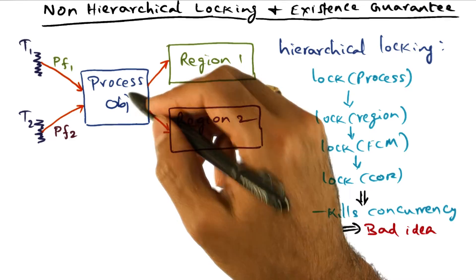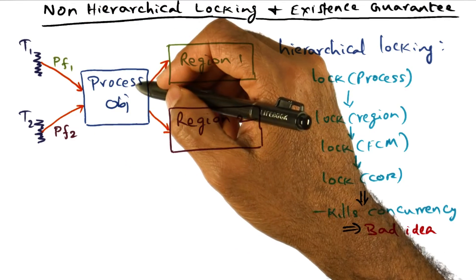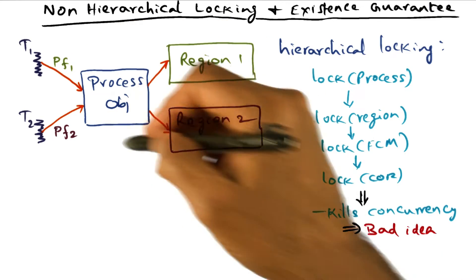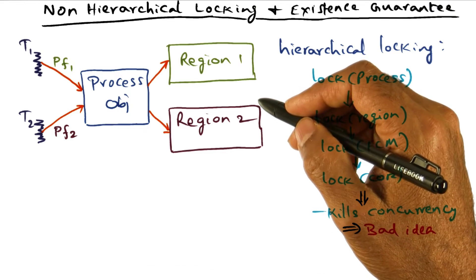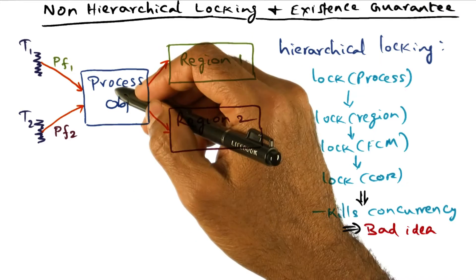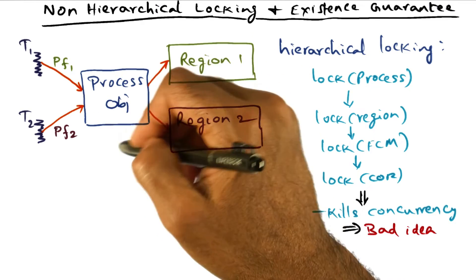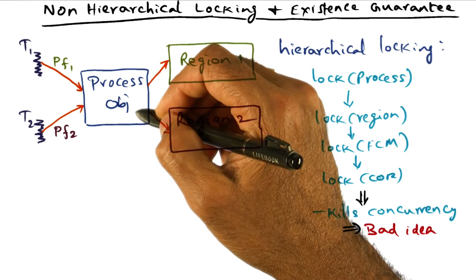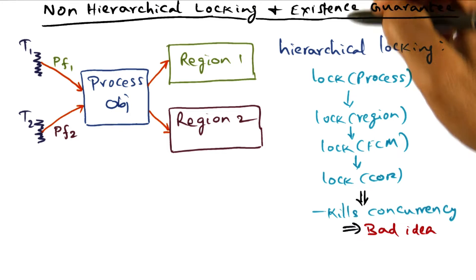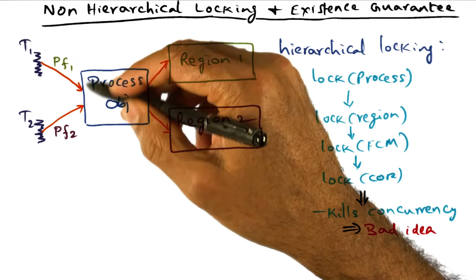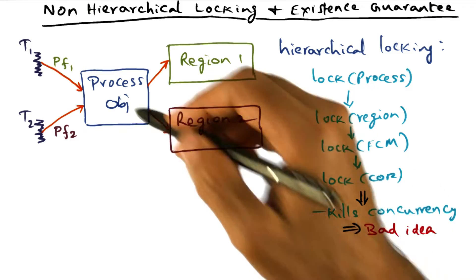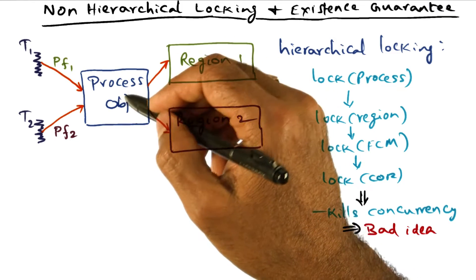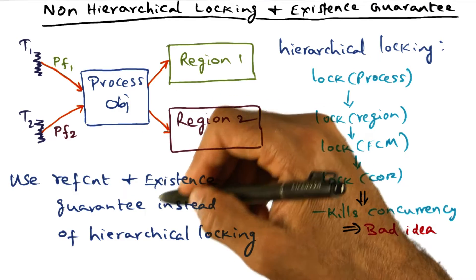You do need integrity of this process object. The reason we might lock the process object is to ensure that it doesn't go away. How can it go away? One of the things that can happen under the covers while page fault service is happening is a decision to migrate a process from one processor to another. If that happens, the process object may be migrated. That's why you have to worry about the integrity of this process object — that is to do with existence guarantee. So what we're going to do is associate a reference count with the object rather than do hierarchical locking, in order to put an existence guarantee on it.